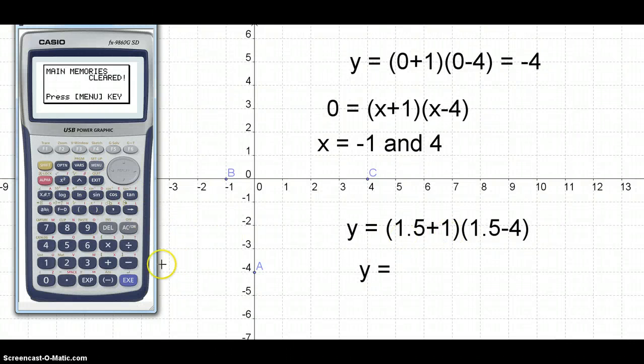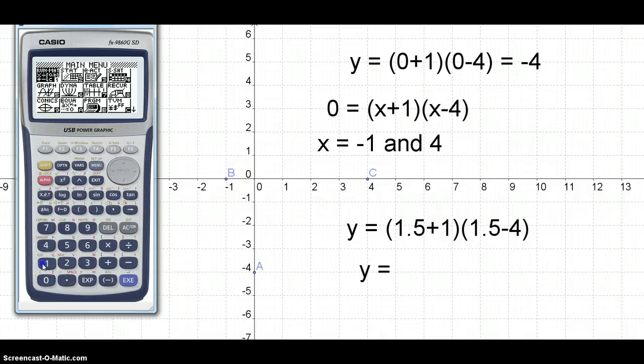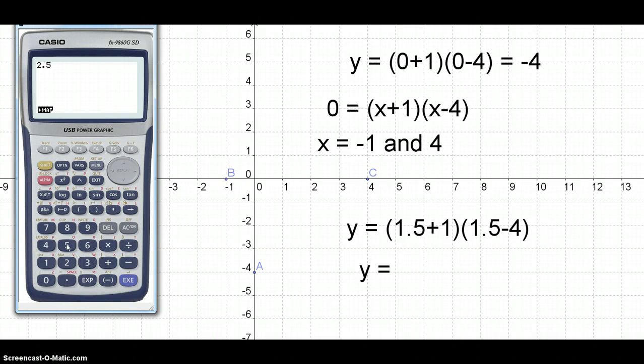1 plus 1.5, that's 2.5. Multiply by... what's 1.5 minus 4? Negative 2.5, yeah? Happy? Multiply them together, you get 6.25.